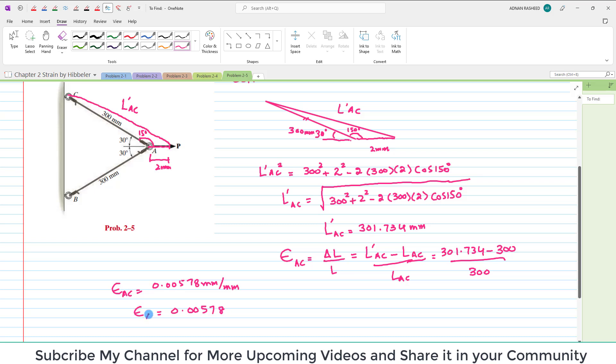So this is strain in A C and the lower side A B, in wire A B the same strain will produce. So we will shortly write strain in A B is equal to strain in A C is equal to 0.00578. So this is the answer of this question.